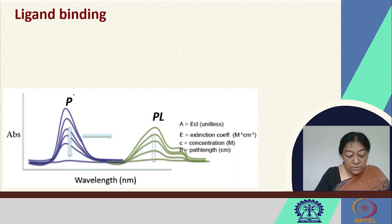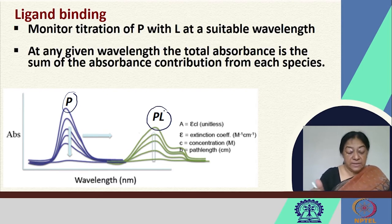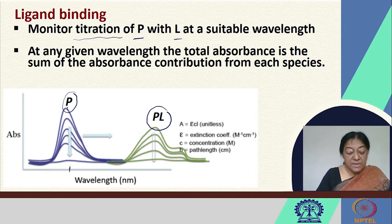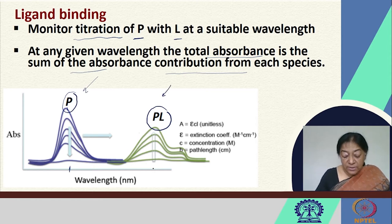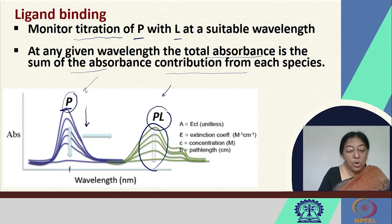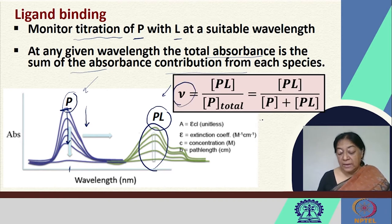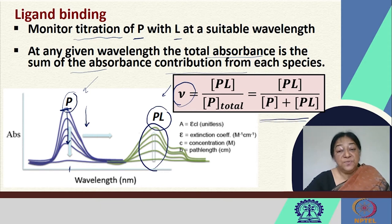If we look at ligand binding in general, we have our protein and we are adding a particular ligand to the protein, forming the protein-ligand complex. As we add the ligand, we can monitor the titration of the protein with the ligand at a specific wavelength. At any given wavelength, the total absorbance is the sum of the absorbance contribution from each species. We can monitor how the concentration of the PL complex increases as the ligand is added, and from that we can find the value of nu and the protein-ligand concentration as well as the free protein available.